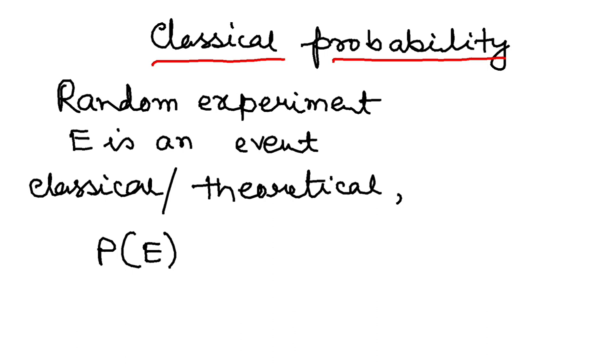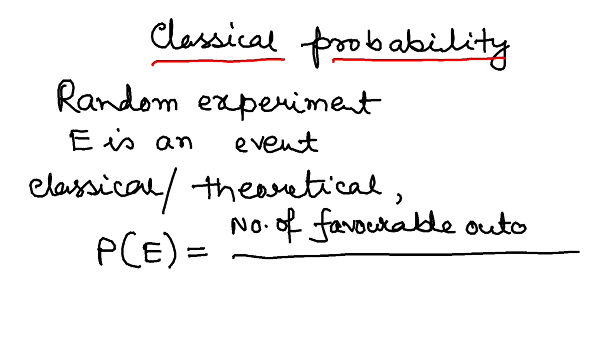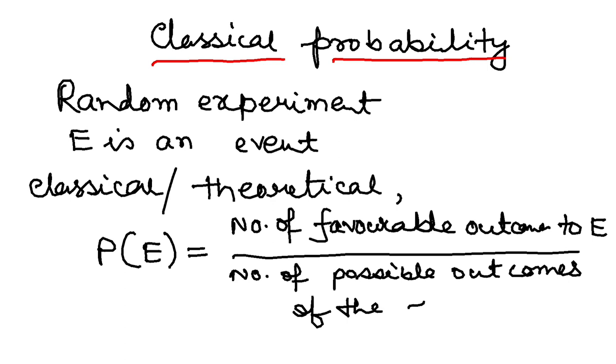So probability of event E is always given by the formula: number of favorable outcomes to event E by total number of possible outcomes of the random experiment.